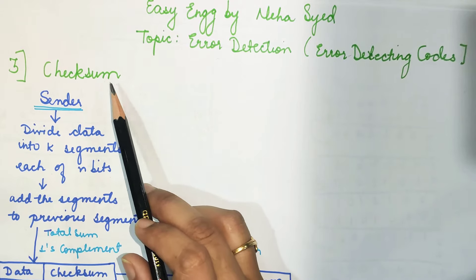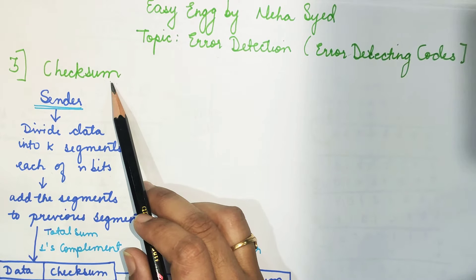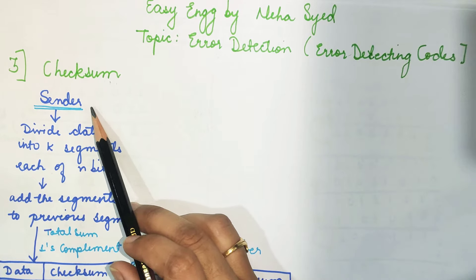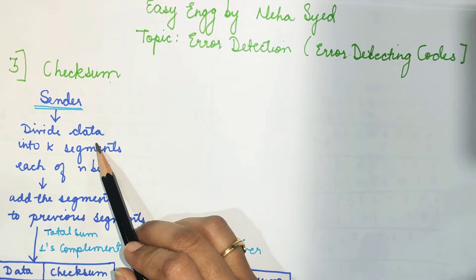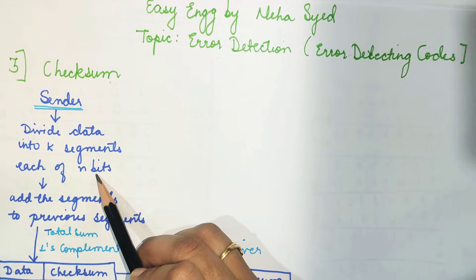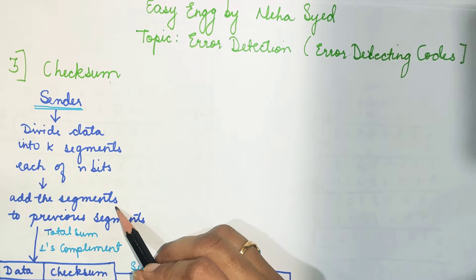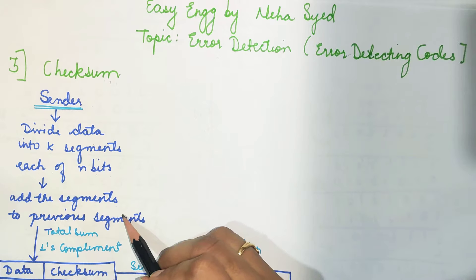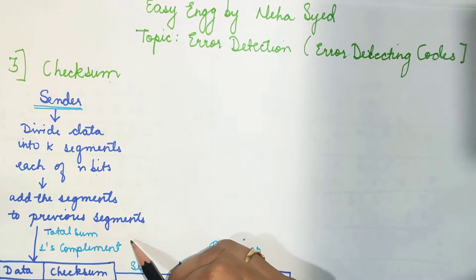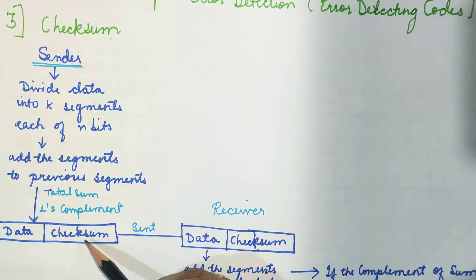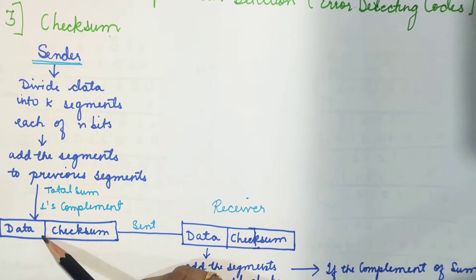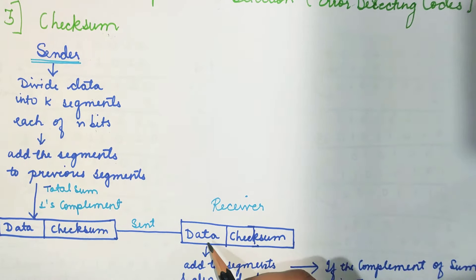So how we are going to detect an error with the help of checksum — we are going to see. Whatever data is going to be sent by a sender, first of all the data is going to be divided into K blocks each containing N bits. Afterward, it is going to add the blocks or segments one by one. If there is a carry, it is going to be added using ones complement arithmetic to get the sum, and that sum is complemented to get the checksum. This checksum is appended with the data and that complete block is sent.